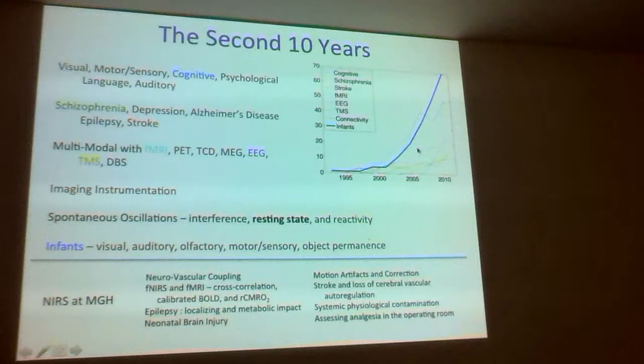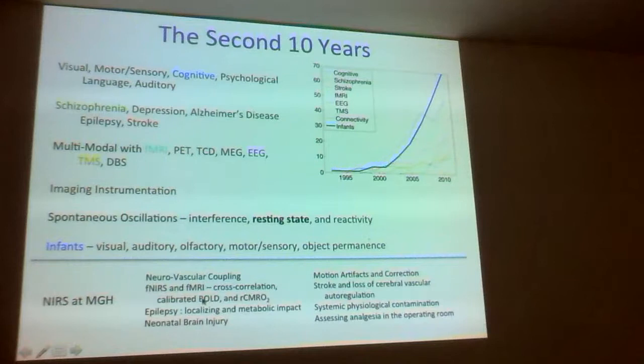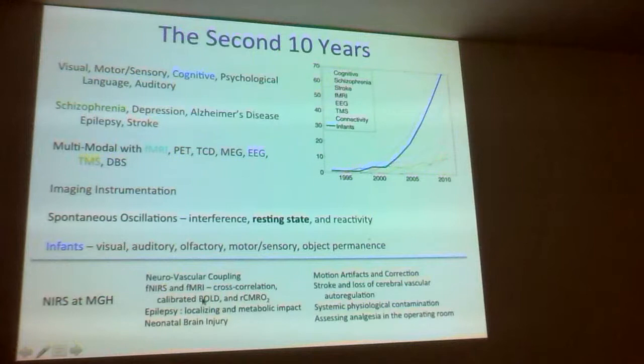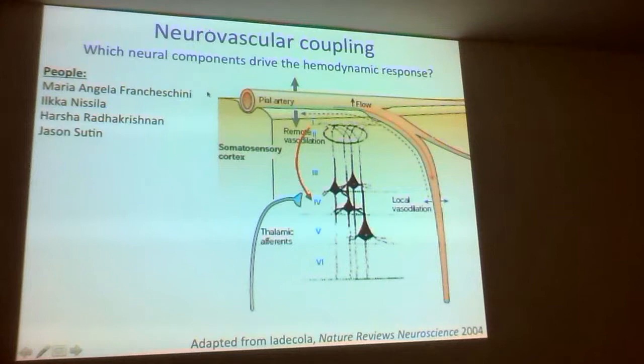One of the important things we did was study neurovascular coupling. I was hired to go work at the Martino Center where they developed fMRI, and they wanted to know what BOLD actually tells you about neuronal activity. To answer that question you need electrophysiological measurements of neuronal activity, measurements of deoxyhemoglobin, and try to understand what BOLD is actually telling us. Marie-Angela Franceschini did these experiments and addressed which neural components are driving the hemodynamic response.